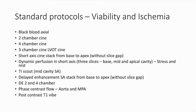For viability or ischemia imaging, the protocol includes: black blood axial of the chest; 2-chamber, 4-chamber, 3-chamber, and LVOT cine sequences; a short axis cine stack from base to apex without slice gap for functional and volume analysis; dynamic perfusion in short axis at 3 slices — basal, mid, and apical — both stress and rest; a TI scout in short axis to determine the nulling time; delayed enhancement short axis stack from base to apex, also repeated in 2-chamber and 4-chamber views; phase contrast flow of the aorta and MPA; and post-contrast T1 VIBE to look at extracardiac structures.